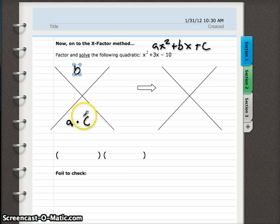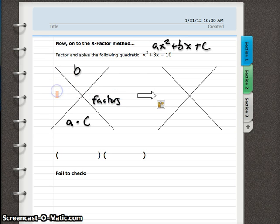And then we're going to ask ourselves, what are factors of the bottom here that add up to whatever the top is? And we're going to put those two factors on the side. So these two factors have to add up to the top and multiply to get the bottom.